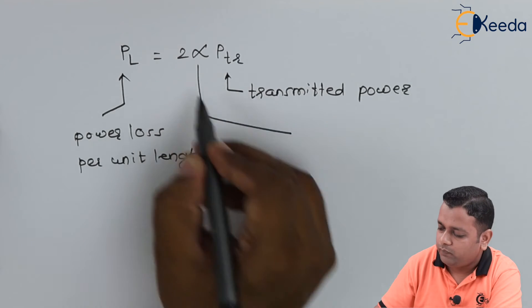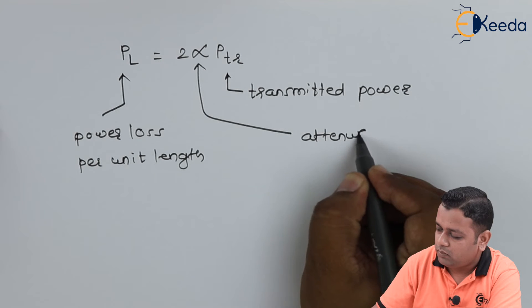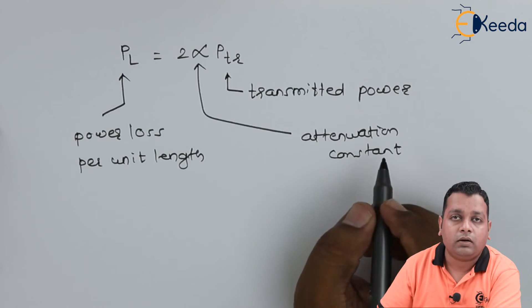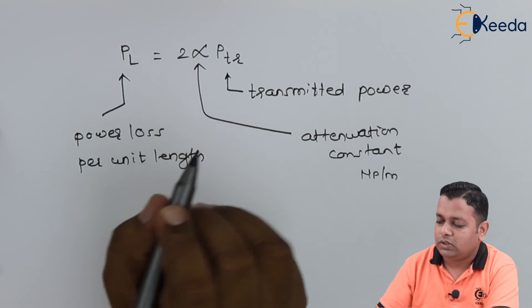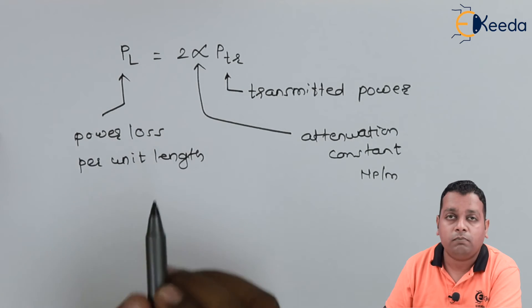per unit length, whereas alpha is the attenuation constant measuring the attenuation in terms of nepers per meter. Two is a constant, therefore we have this per unit length power loss.